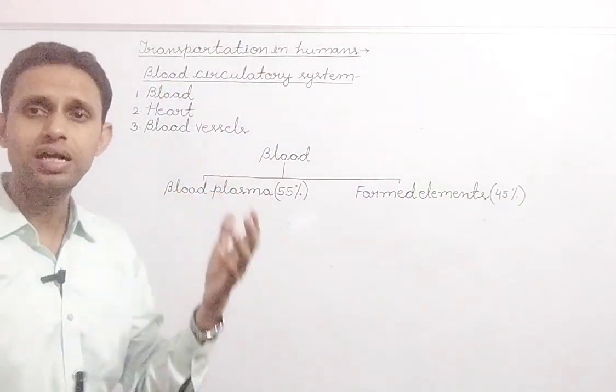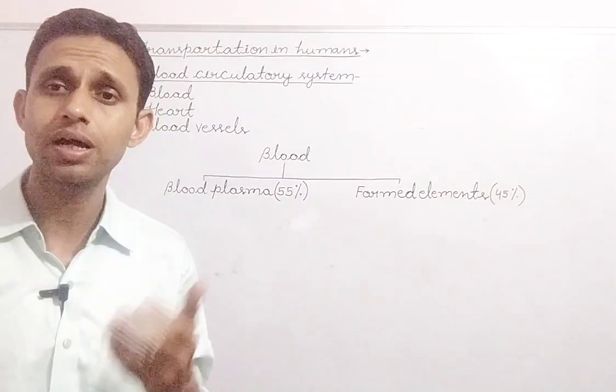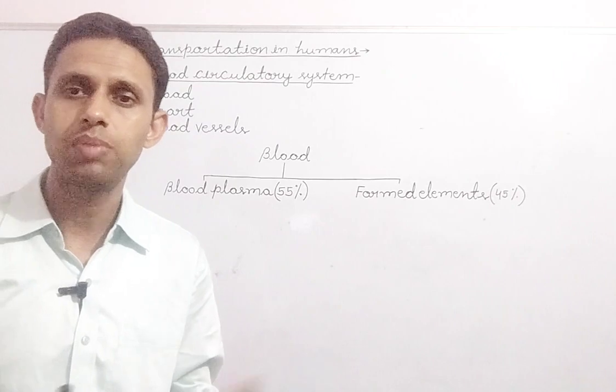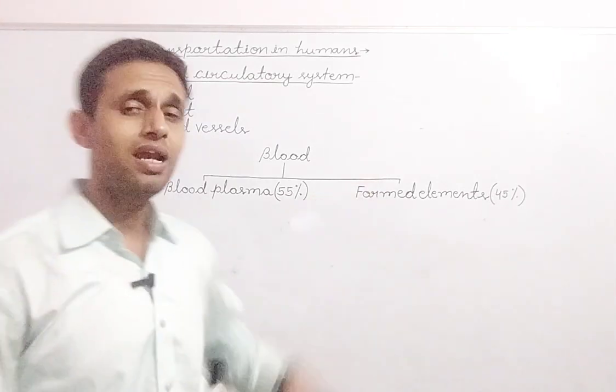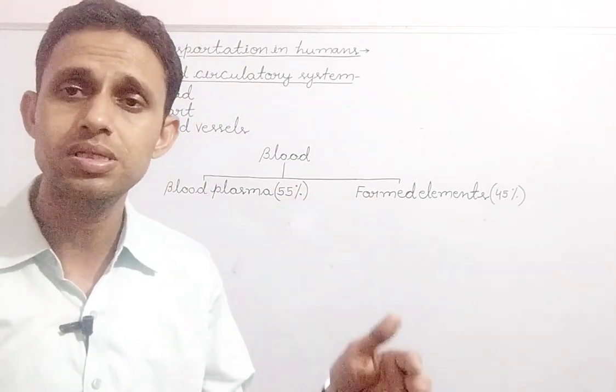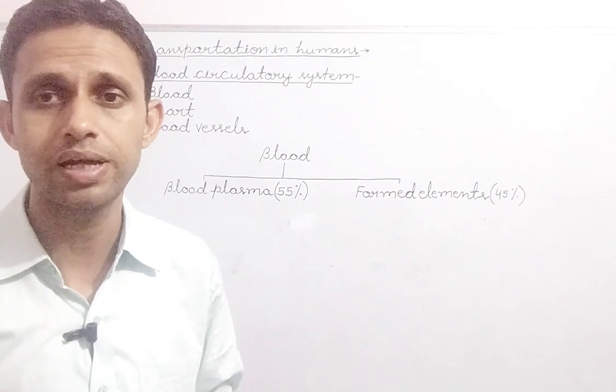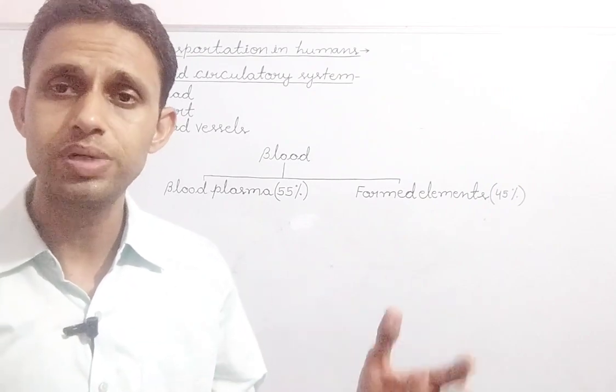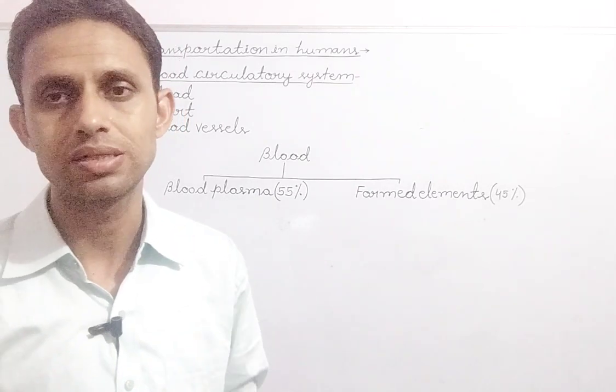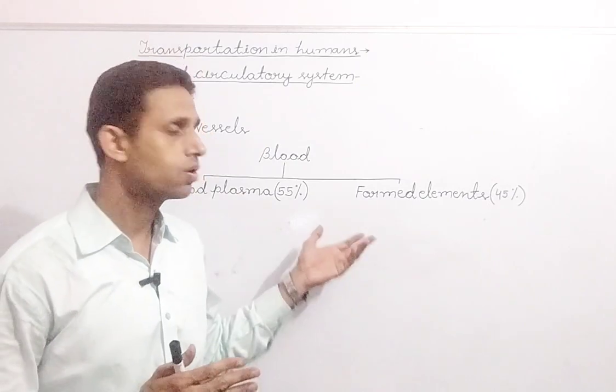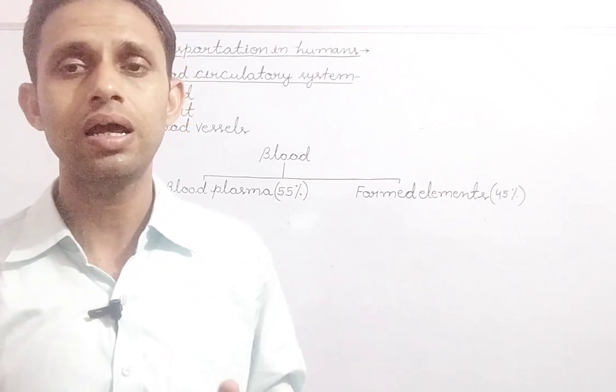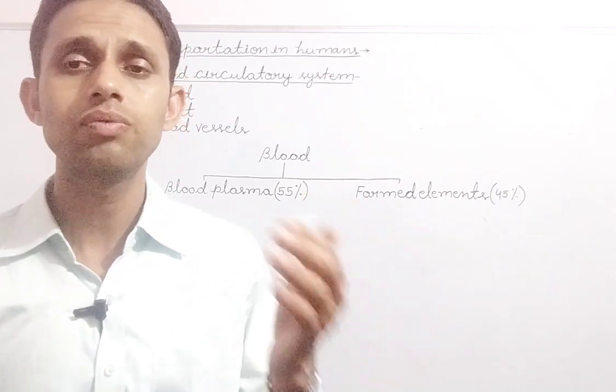Blood plasma me 80-90% water hootate hai. Proteins hootate hai, carbohydrates, minerals, salts, electrolytes. Formed elements jo hai, 45% hai, jis mein blood ki cells hootate hai. Red blood corpuscles ya RBCs, jini hum erythrocytes bhi kahtae hai. White blood corpuscles, WBCs, jini hum leukocytes bhi kahtae hai. And platelets or thrombocytes. These are the blood cells which are known as formed elements. RBCs ke andar hemoglobin pigment hootate hai, red color ka. Yehi karan hai ki jo blood ka color hai, woh red hootate hai.